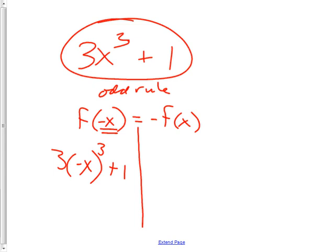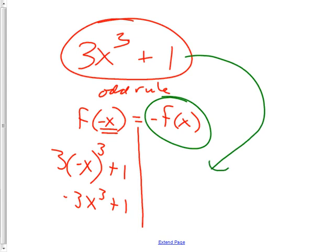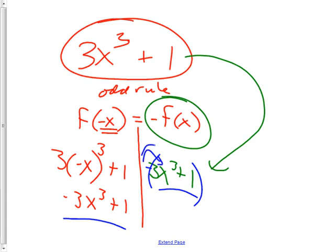The opposite of the function f(x) = 3x³ + 1 would be −f(x). The mistake kids make is just putting a negative on the front number, making it look like they match. But you have to distribute the negative to all terms: it's −3x³ minus 1. Now you can see they're not equal, so it's not odd.